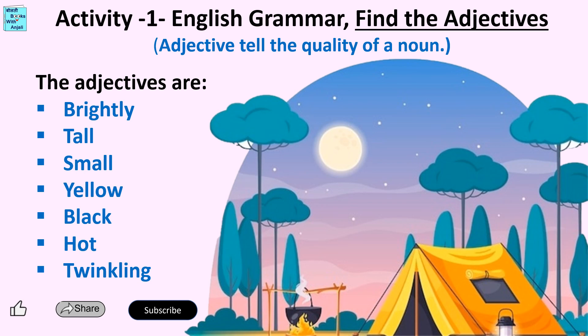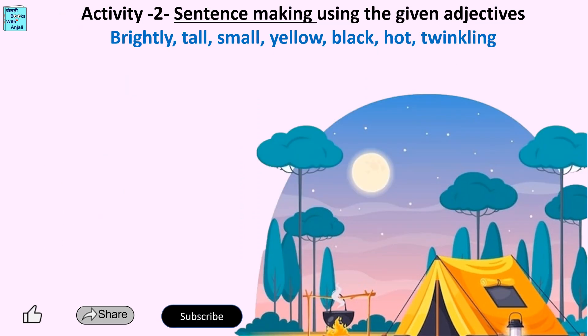small, yellow, black, hot, and twinkling. Now in this activity, we will try to make sentences using the adjective words and describe this picture.